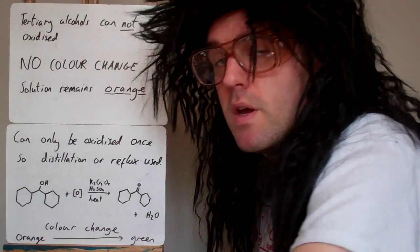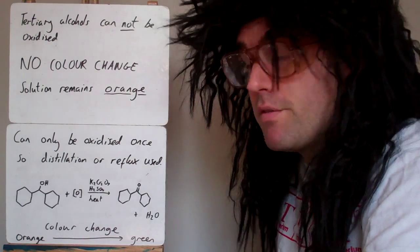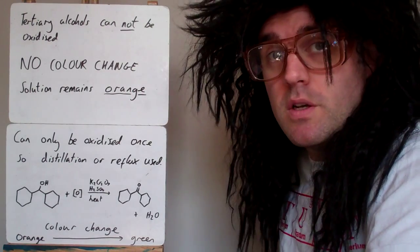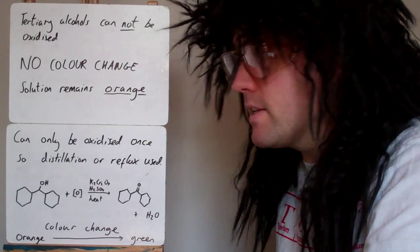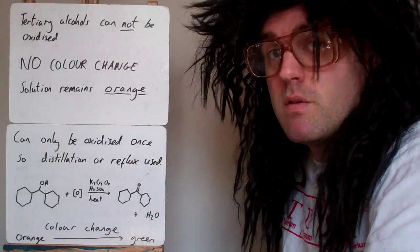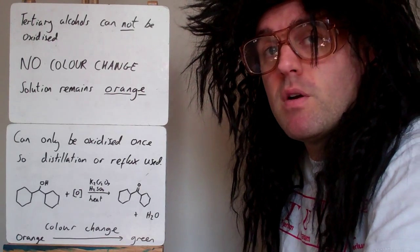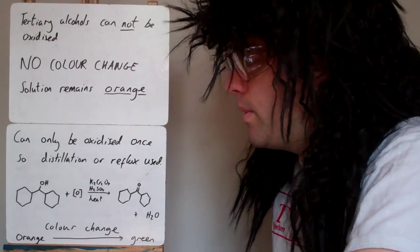Tertiary alcohols, where the carbon with the OH is bonded to three other carbons, cannot be oxidized, so they stay as they are. There'll be no color change because the potassium dichromate isn't reacting, so it stays orange. That's what we get with every tertiary alcohol - no matter what the conditions are, it will not be oxidized.